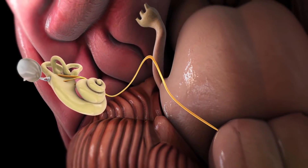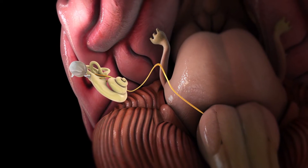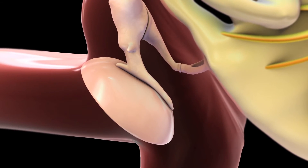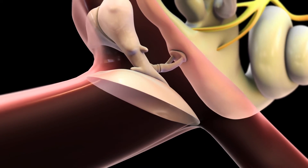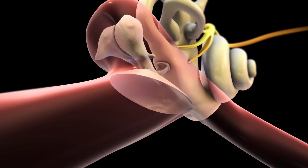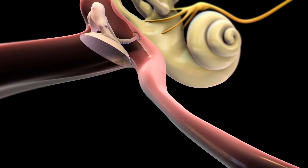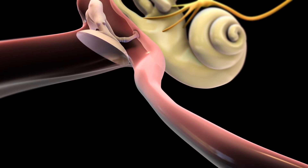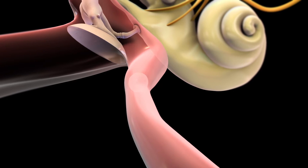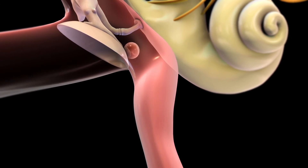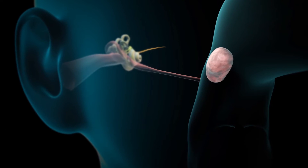This complex process occurs instantly, allowing us to hear the sounds around us as they happen. For the eardrum to vibrate properly, the air pressure in the middle ear must be at the same level as air outside the ear. Air enters the middle ear through the eustachian or auditory tube. When you yawn and hear a pop, your eustachian tube has just carried an air bubble to your middle ear to equalise the pressure.